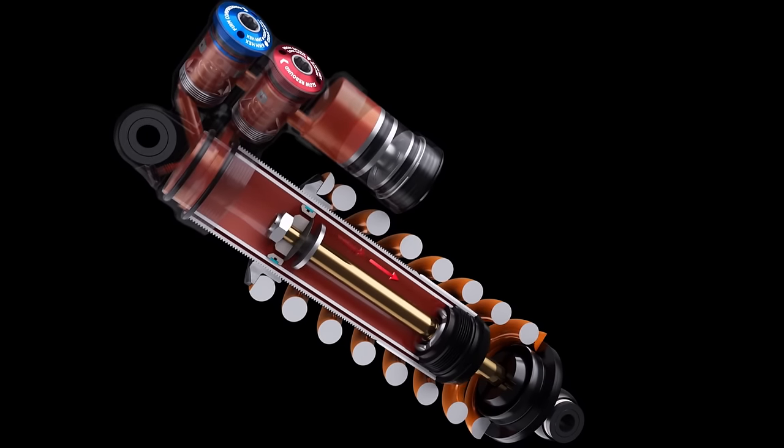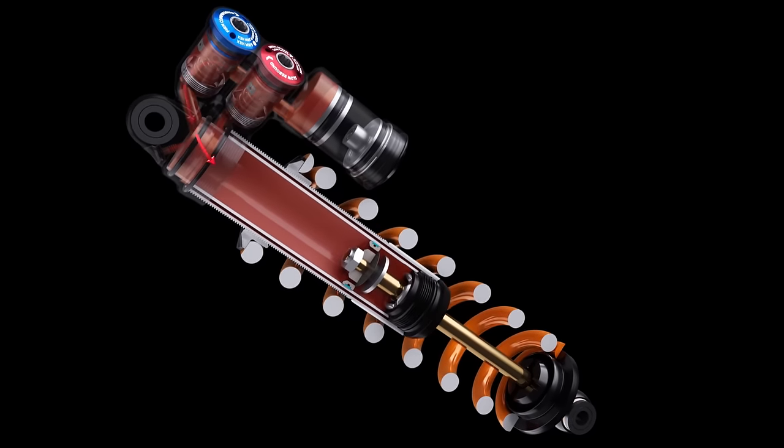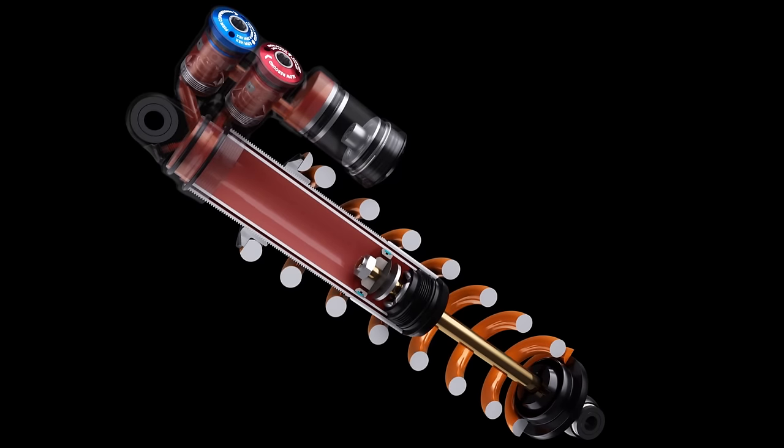During the rebound stroke, the main piston moves the full column of oil out of the inner body, through the bleed holes, and through the rebound rod valve, circulating the oil in the opposite direction of compression.